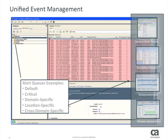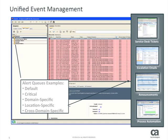Policies that you define can trigger the types of actions shown to the right, such as service desk tickets sent to a specific systems or network engineer. You can send an email to a manager if an alarm has not been closed after so many minutes, or trigger a system reconfiguration through automated process flow. SOI does this with the integration with service desks, email systems, and IT process automation.